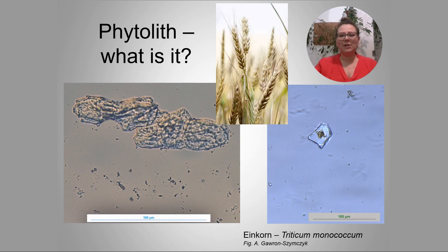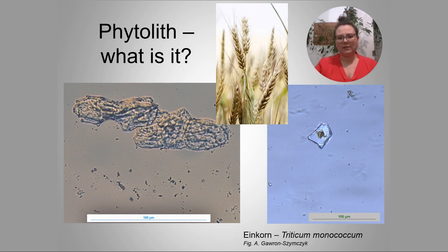Phytoliths are strongly differentiated in terms of shapes and sizes. They consist of silicon dioxide, water, and small amounts of aluminium, iron, magnesium, potassium, cuprum, nitrogen, and organic carbon. During the life cycle, every plant absorbs water with monosilicic acid from the soil.